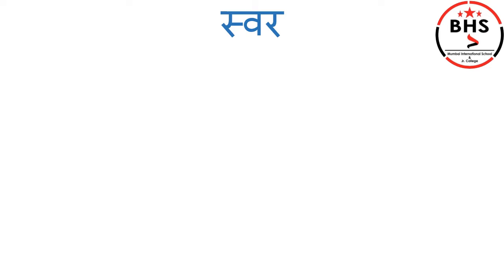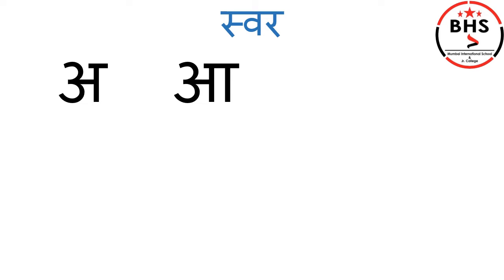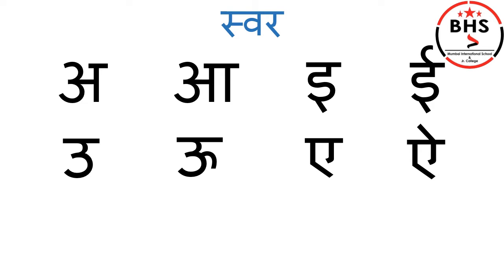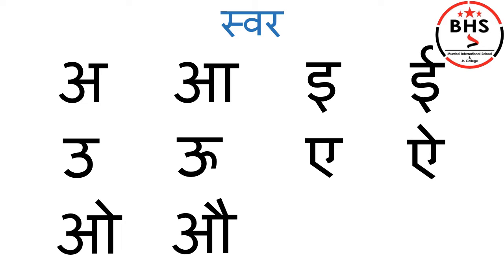Swar. A. E — we also call it Chhoti E. E — we also call it Badi E. U — we also call it Chhota U. U — we also call it Bada U. A. I. O. O. An. Aha.